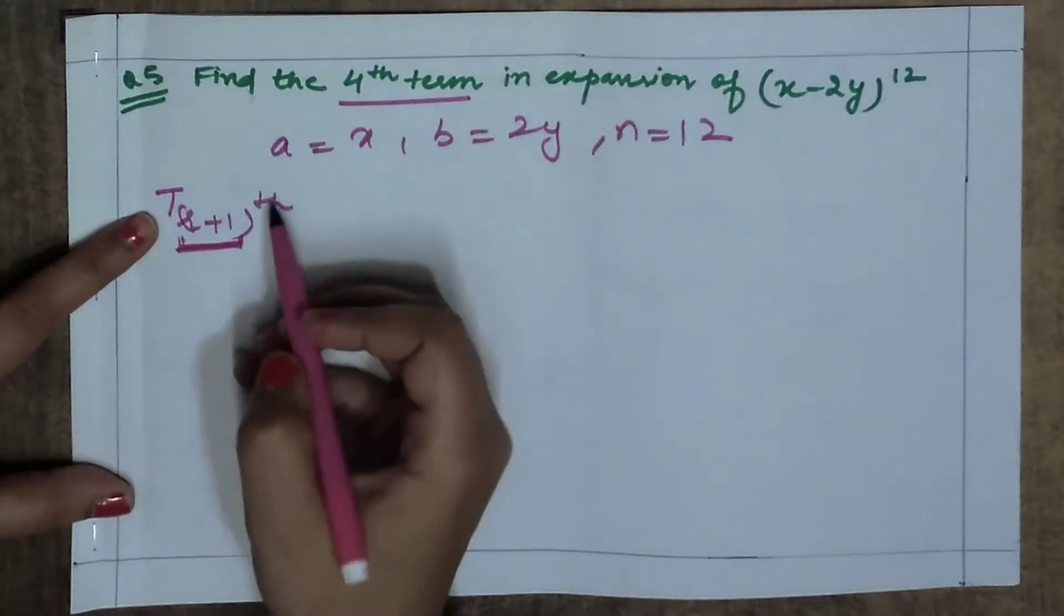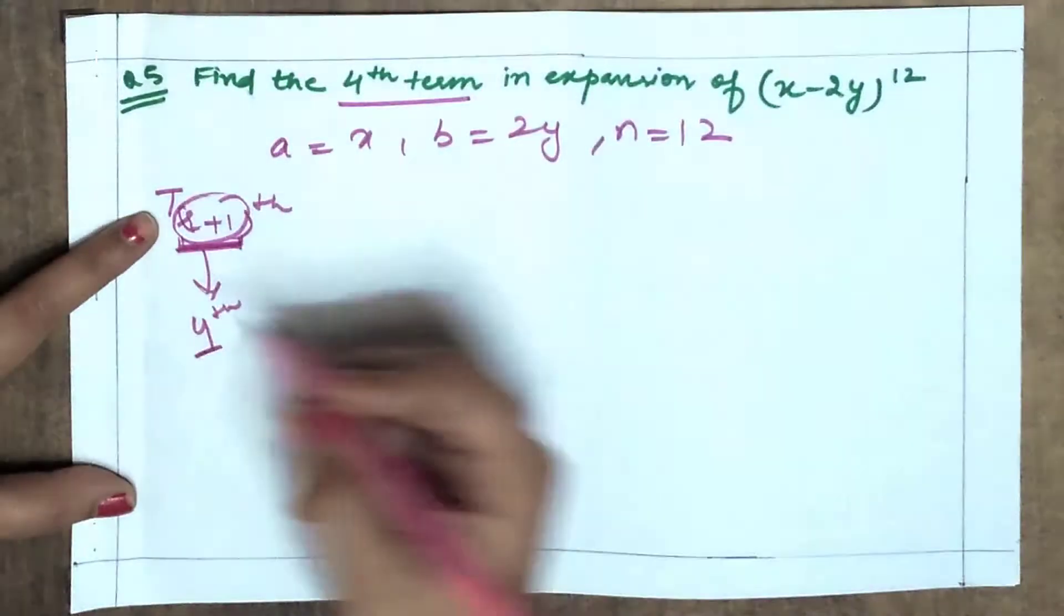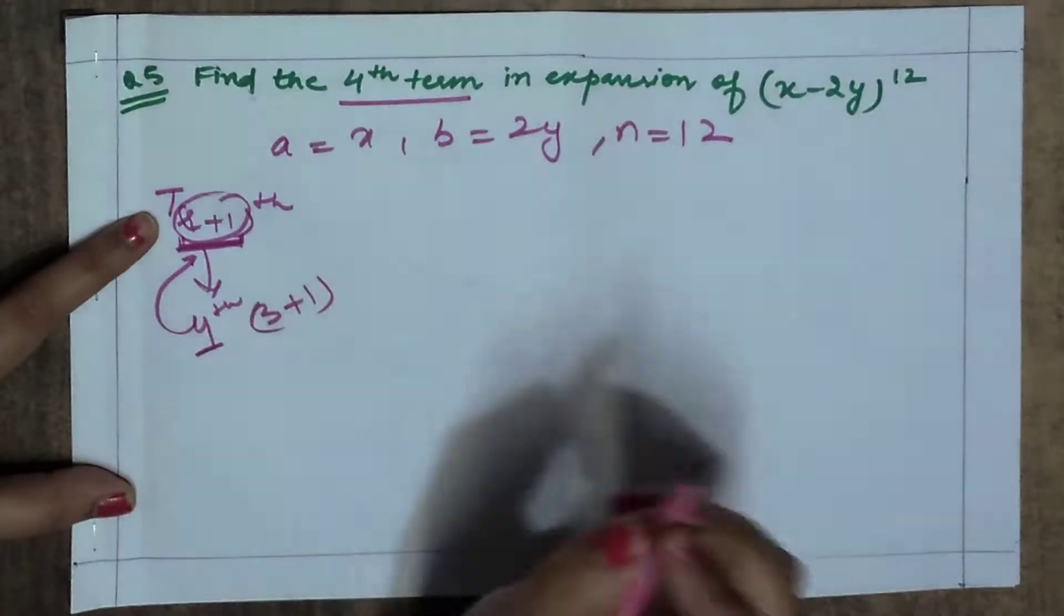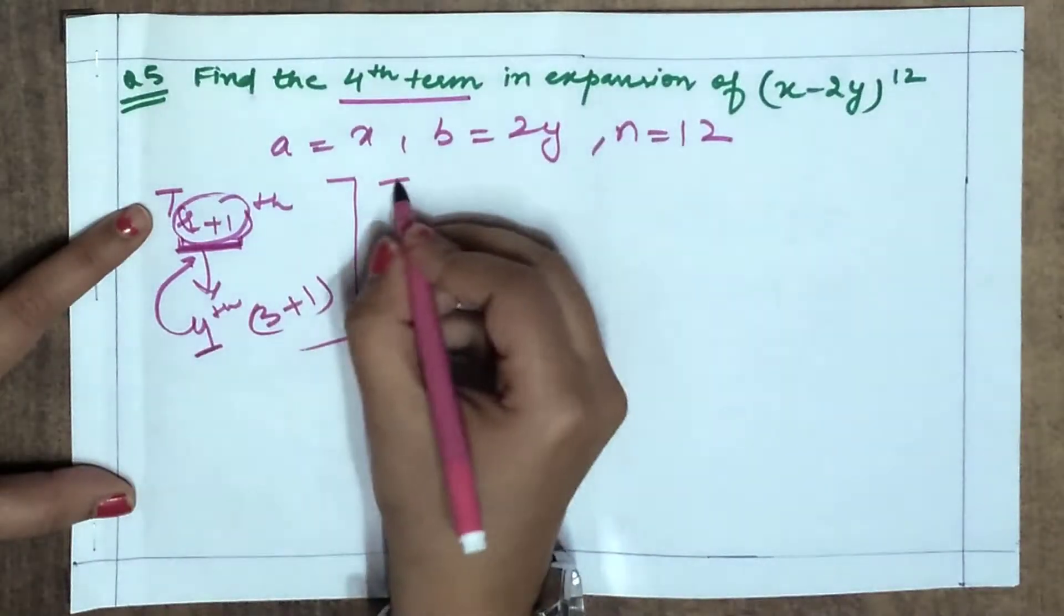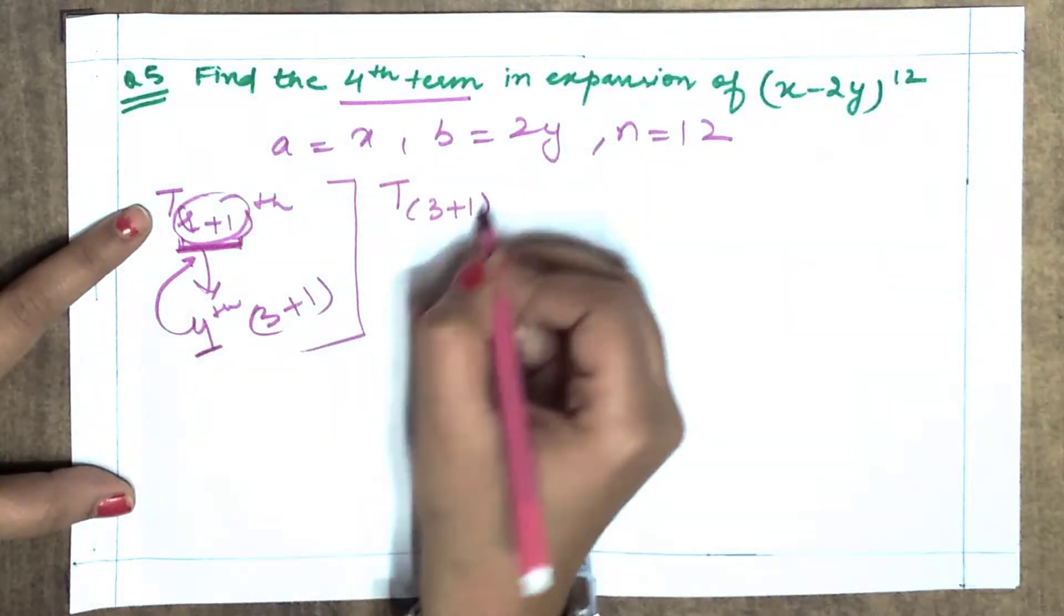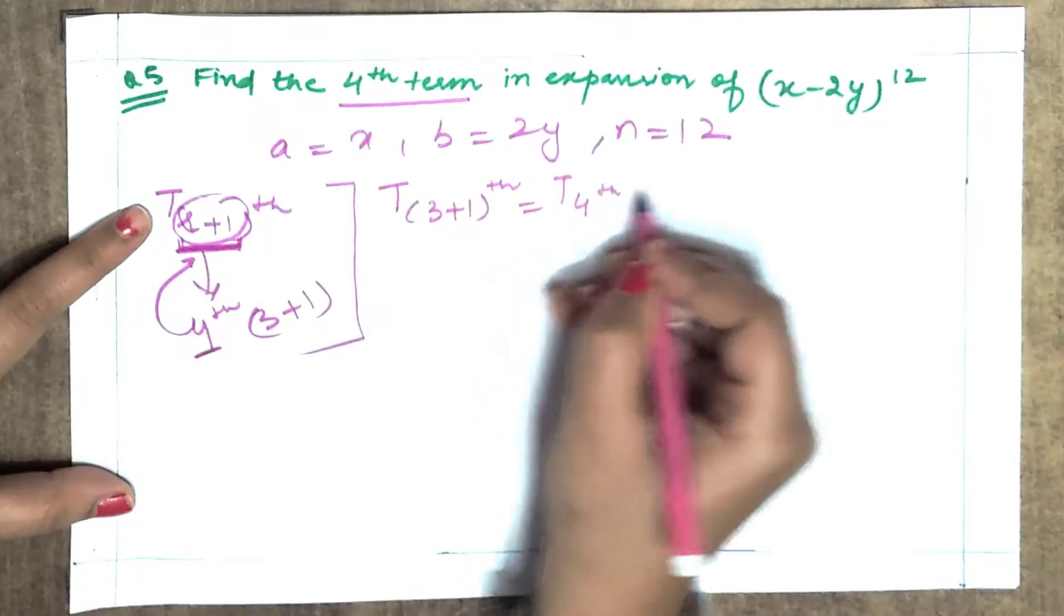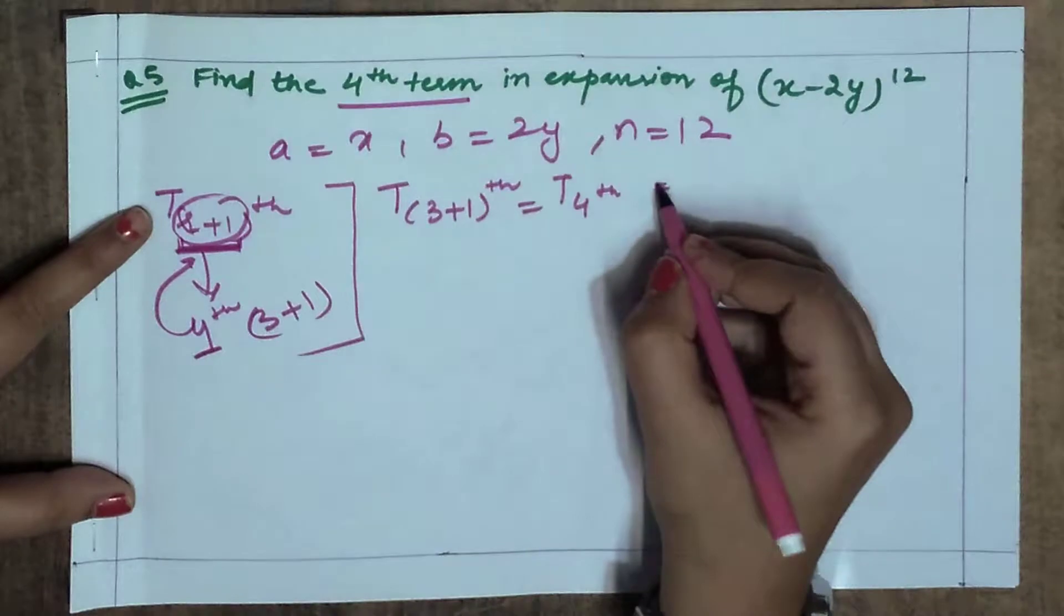So this is the fourth term. What do you want to write? 3 plus 1. So I will write 3 plus 1th term, which is the 4th term which you are asking. What is your formula?